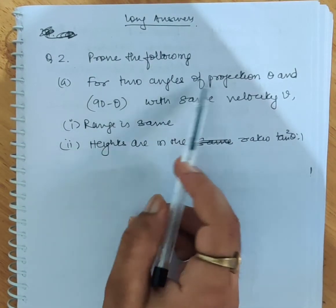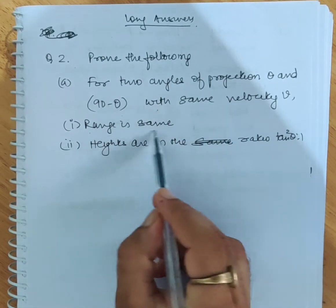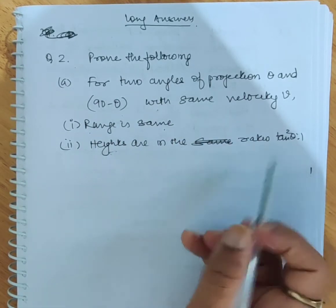Prove the following: For two angles of projection θ and (90-θ) with same velocity, (i) Range is same (ii) Heights are in the same ratio tan²θ:1